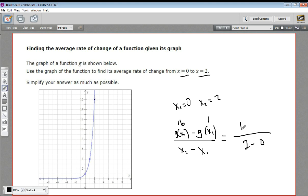So we've got 16 minus 1, which is 15 over 2 or 7.5. The average rate of change of this function from the interval 0 to 2 is a slope of 7.5. That is how to find the average rate of change from a graph of a function.